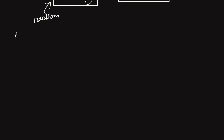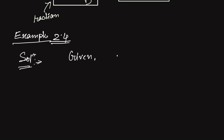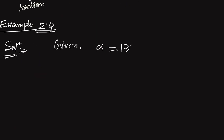Now let us see an example — example number 2.4 from the NCERT textbook. In this question, the sun's angular diameter is measured to be 1920 seconds of arc. The distance capital D of the sun from the Earth's surface is 1.496 into 10 to the power 11 meters. We have to find the diameter of the sun. So the given values are: alpha equals 1920 seconds, and we need to convert this into radians, since all formulas require the angle in radians.